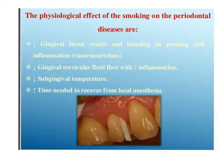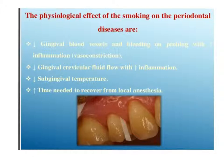The physiological effects of smoking include decreased gingival blood vessels and reduced bleeding on probing despite increased inflammation, which obscures the signs and symptoms of disease. There is decreased gingival crevicular fluid flow despite increased inflammation — important since GCF is an immunological fluid protecting soft and hard tissue. There is also decreased subgingival temperature showing less inflammatory gingiva, and increased time needed to recover from local anesthesia.